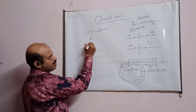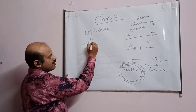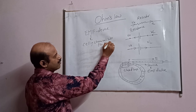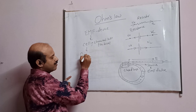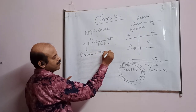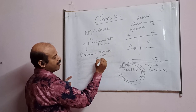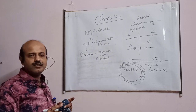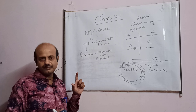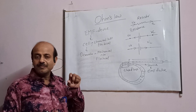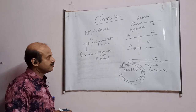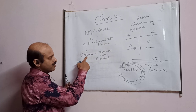One EMF device which is generally used is a cell. What a cell does is it converts chemical energy into electrical energy. We have another EMF device known as a generator, which converts mechanical energy into electrical energy. Everywhere there is energy conversion. In case of a car also, there is a dynamo connected inside which first takes mechanical energy and then gives energy to the car.